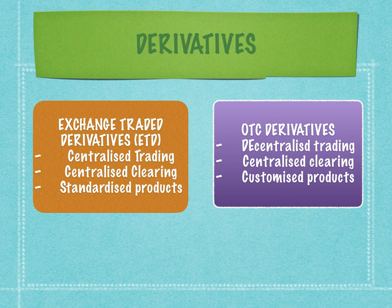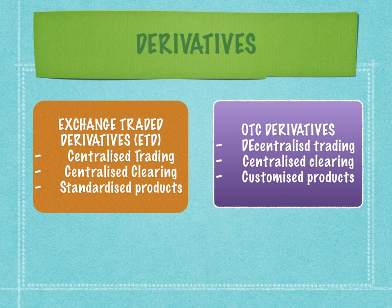On the NSE there are two segments: the equity or cash segment, and the F&O segment where futures and options are traded. Centralized clearing, centralized trading, and standardized products all result in ease of transaction and ease of settlement. Because everything is centralized and standardized, the methodology for calculating margins and other factors is very standardized among exchange traded products.